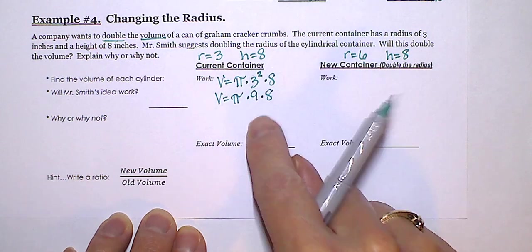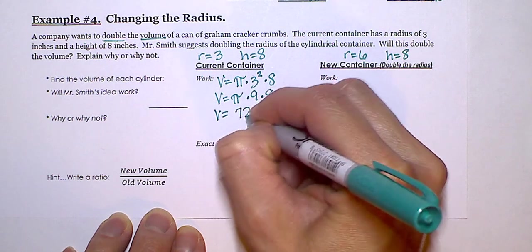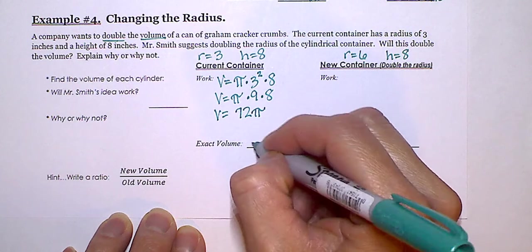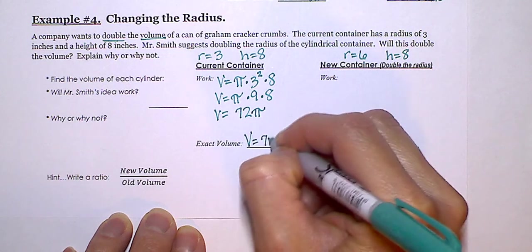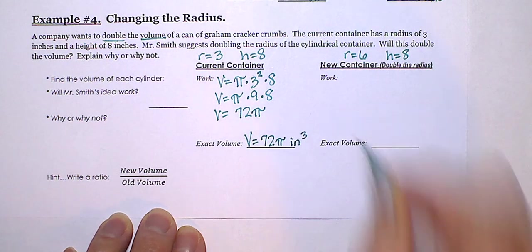And then I'm going to go ahead and put 9 times 8 together. So volume is 72 pi. So for the current container, our volume is 72 pi inches cubed, or cubic inches.